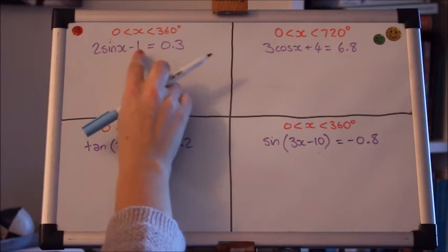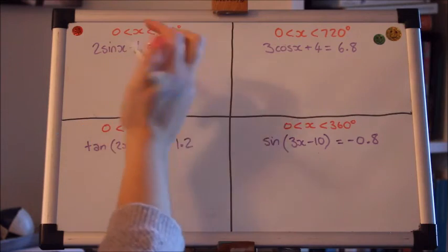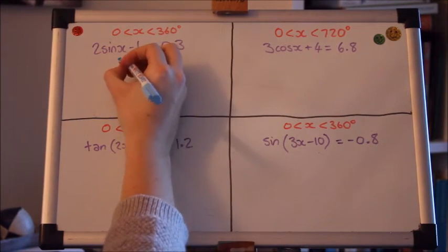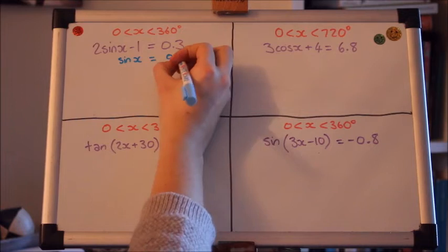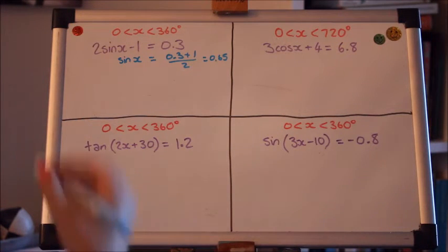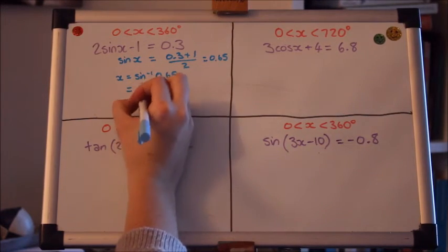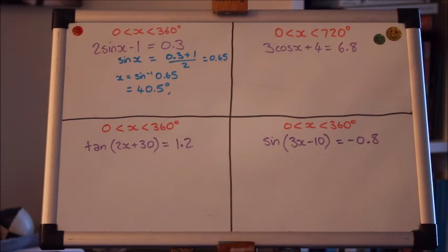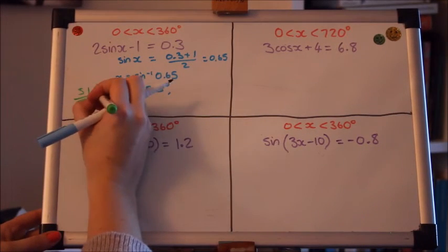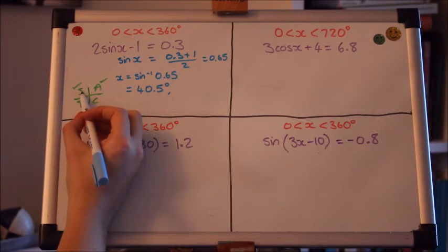So let's take this one first. We're going to plus one and divide by two to unpick the sine x. So we're going to solve that equation first. Now we can proceed as usual. Get the acute angle and look at the CAST diagram. So here we want this quadrant which is 180 minus.